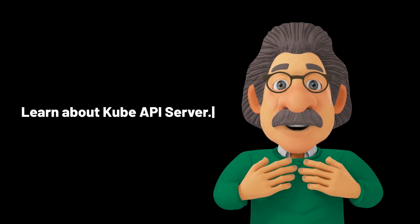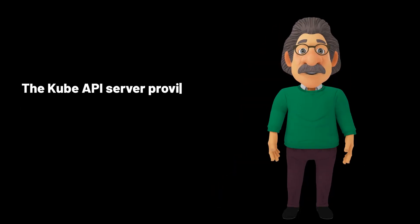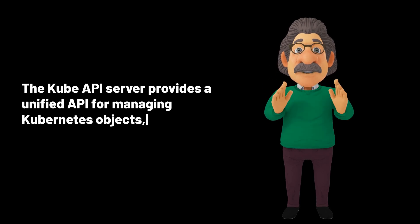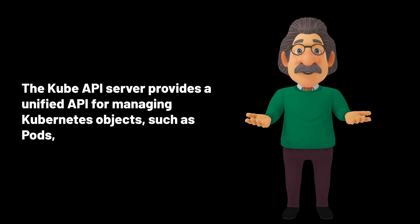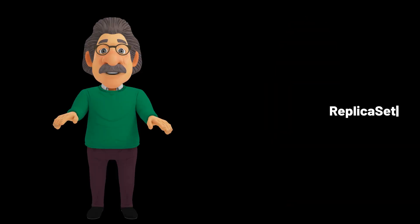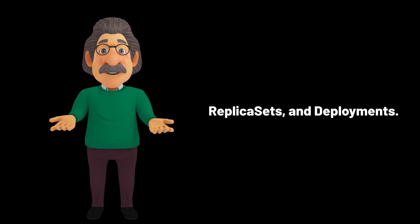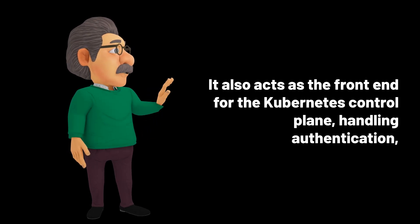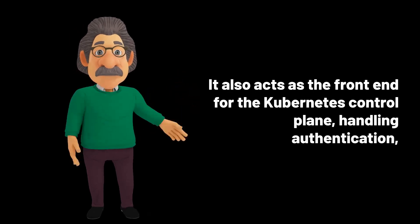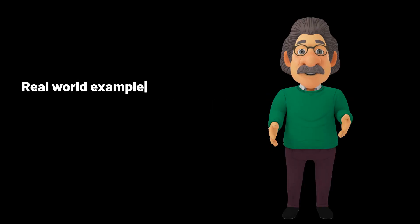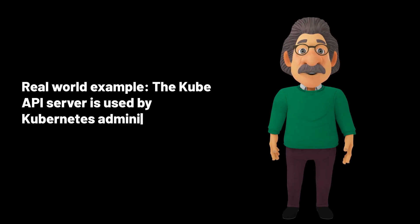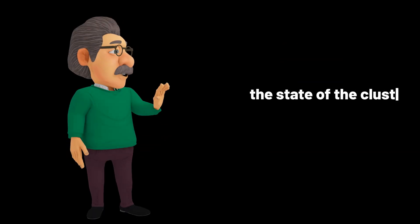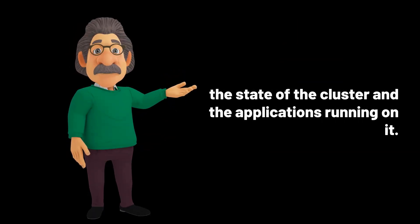The kube API server provides a unified API for managing Kubernetes objects such as pods, replica sets, and deployments. It also acts as the front end for the Kubernetes control plane, handling authentication, authorization, and admission control. Real-world example: the kube API server is used by Kubernetes administrators to manage the state of the cluster and the applications running on it.